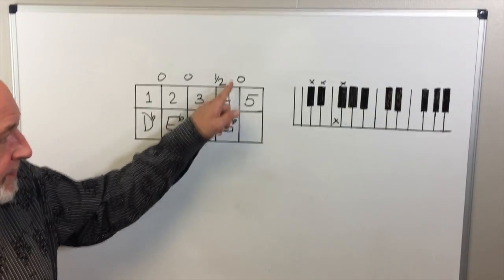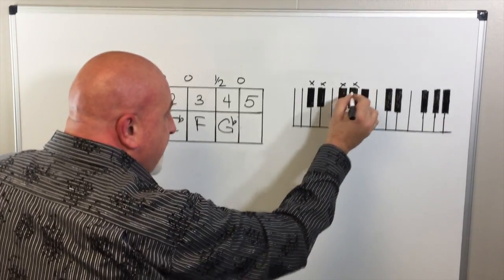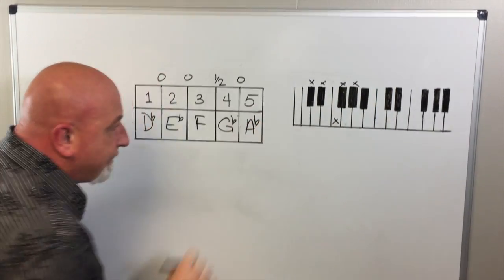And between the fourth and the fifth position, we have a whole step, which means that we are going to skip a key, which would be G, and that would land us on A-flat.